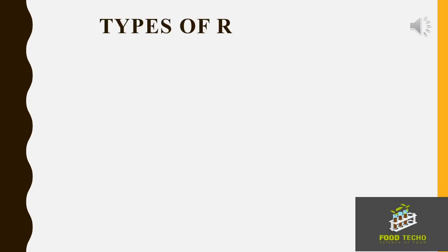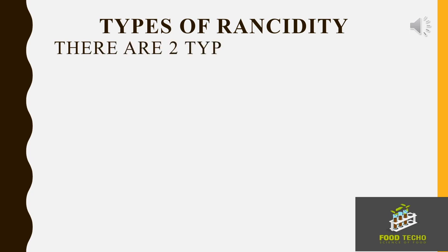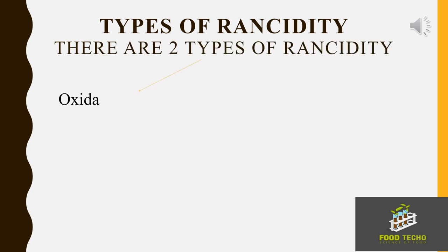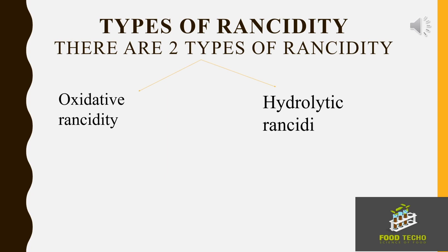Now let us see the types of rancidity. Mainly, there are two types of rancidity: oxidative rancidity and hydrolytic rancidity.